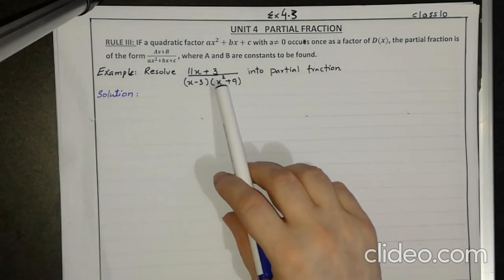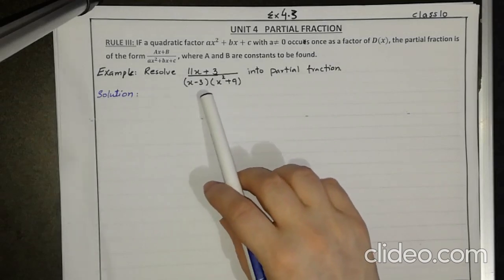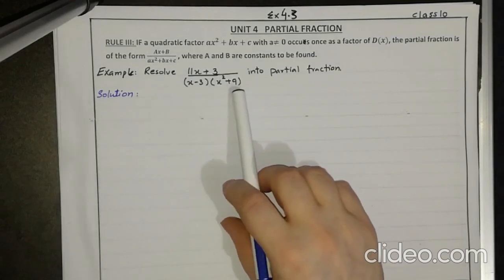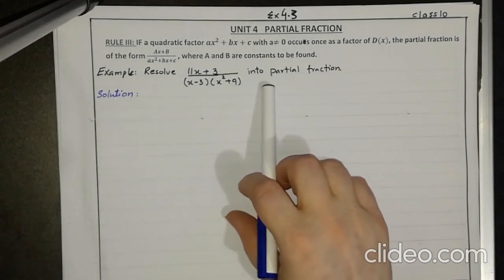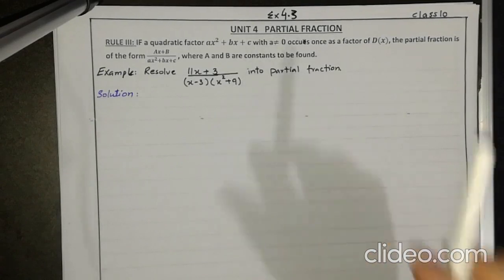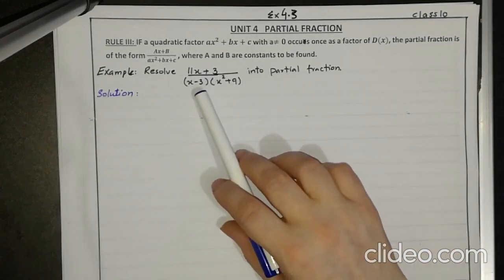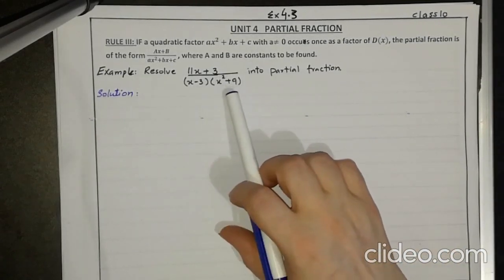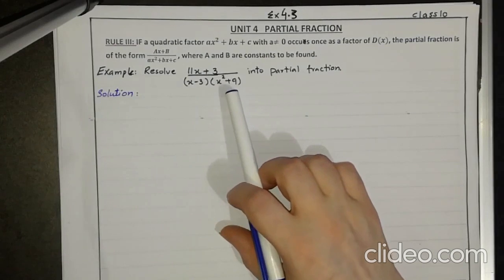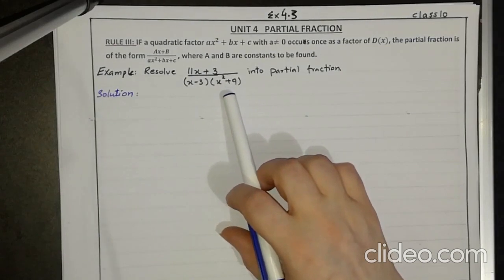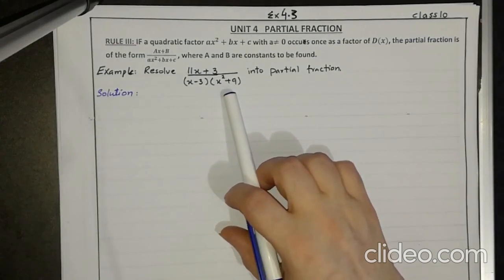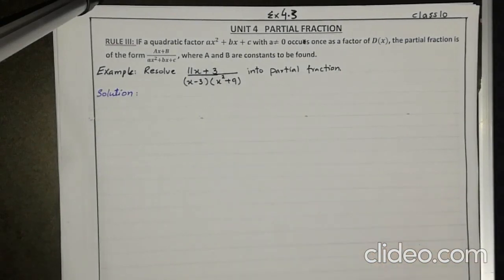We have a question: resolve (11x + 3) over (x − 3)(x² + 9) into partial fractions. Here (x − 3) is the linear factor and (x² + 9) is the quadratic factor. This quadratic factor occurs once in the denominator.